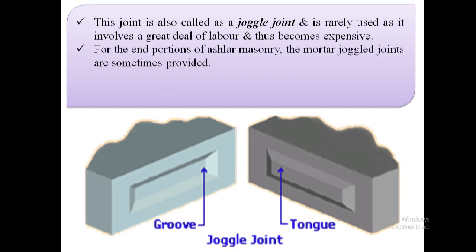For the end portions of ashlar masonry, the mortar joggle joints are sometimes provided. The cement grout is poured in the joggle form by means of a hammer and a punch.